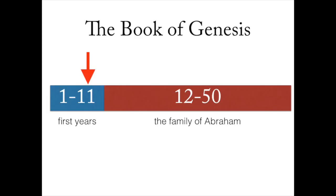Genesis chapter 8 falls towards the end of the first section of the book of Genesis. The first section of the book of Genesis is about the first years of creation and also the first years of mankind. And now that the flood is coming to an end in Genesis chapter 8, we are getting closer and closer to the next section in Genesis, which deals with the family of Abraham.